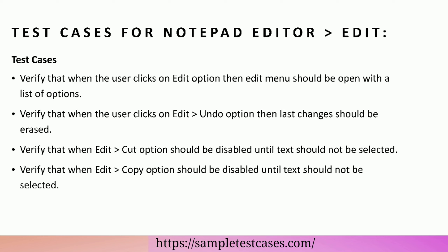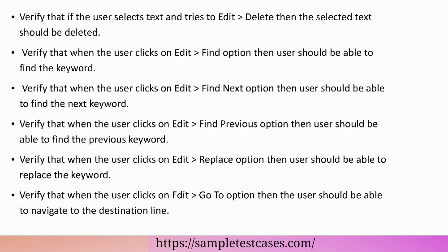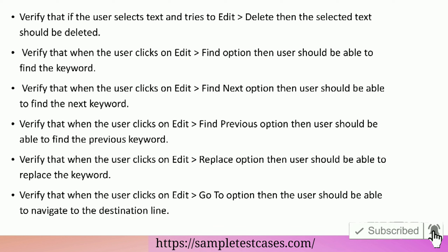Verify that the Edit Cut option should be disabled until text is not selected. Verify that the Edit Copy option should be disabled until text is not selected. Verify that if the user selects text and tries to Edit Delete, then the selected text should be deleted. Verify that when the user clicks on Edit Find option, then the user should be able to find a keyword.